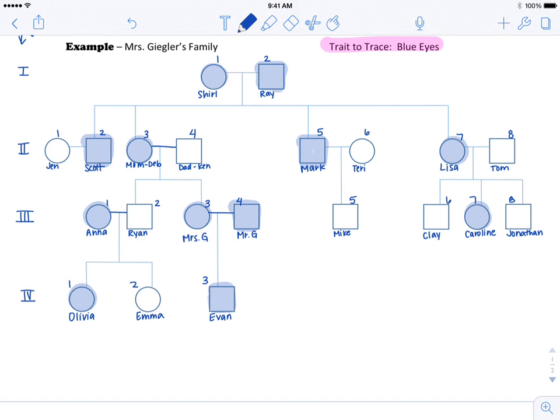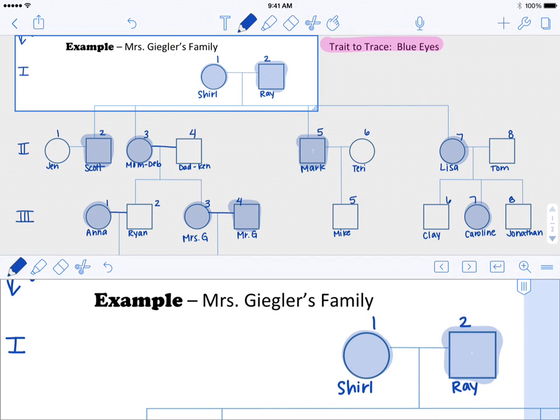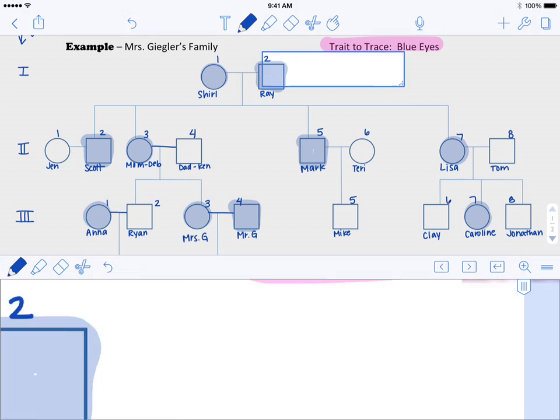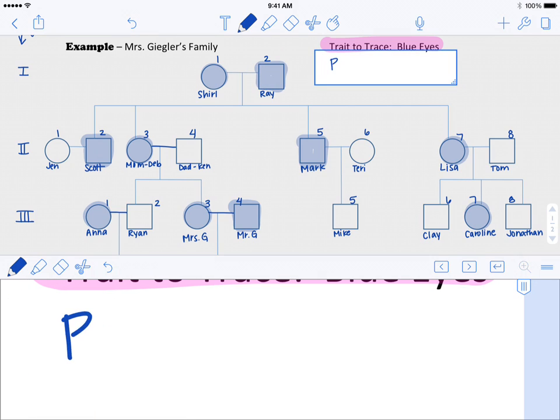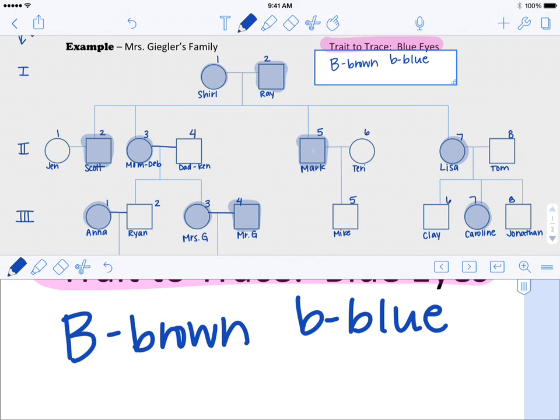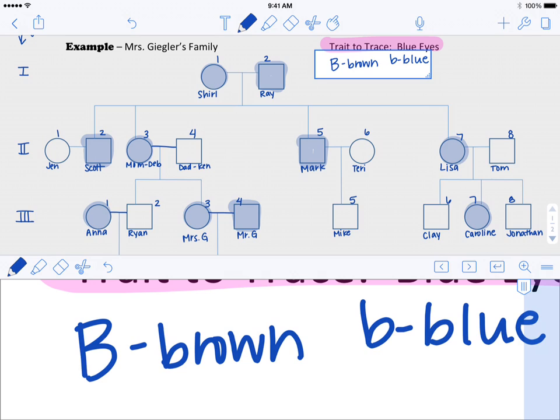Now we already know how blue eyes are inherited. We know that brown is dominant to blue. So what we're going to do with this pedigree is just figure out what everybody's genotype is.